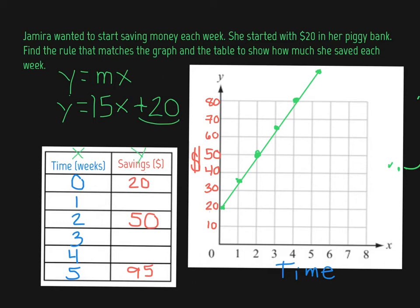Now let's check to see if our rule works for our first data point here. So if we had, we should have 20, because that's our y value, is equal to 15 times 0 plus 20. So let's do some order of operations. 15 times 0 is 0 plus 20 is 20. So that would be true. That works for that.